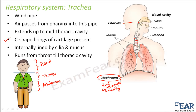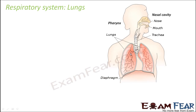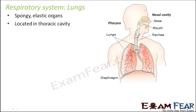The lungs are the most important organs of the respiratory system. They are spongy, elastic organs — elastic because they need to expand when breathing in to accommodate extra air, and contract when breathing out to expel air. The two lungs, right and left, are located in the thoracic cavity.